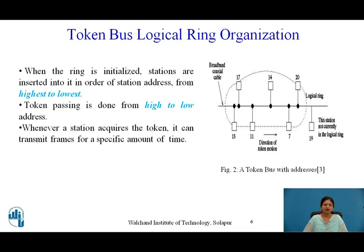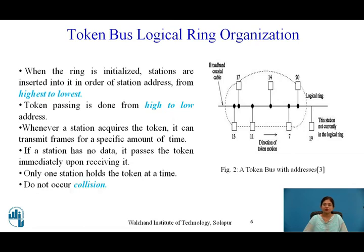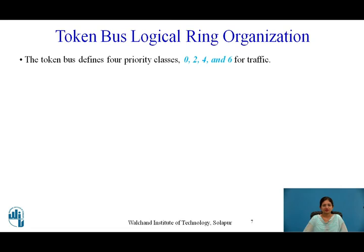Whenever a station acquires the token, it can transmit frames for a specific amount of time because a timer is set for each station. If a station has no data, it passes the token immediately upon receiving it. Only one station holds the token at a time, which is why collisions do not occur.